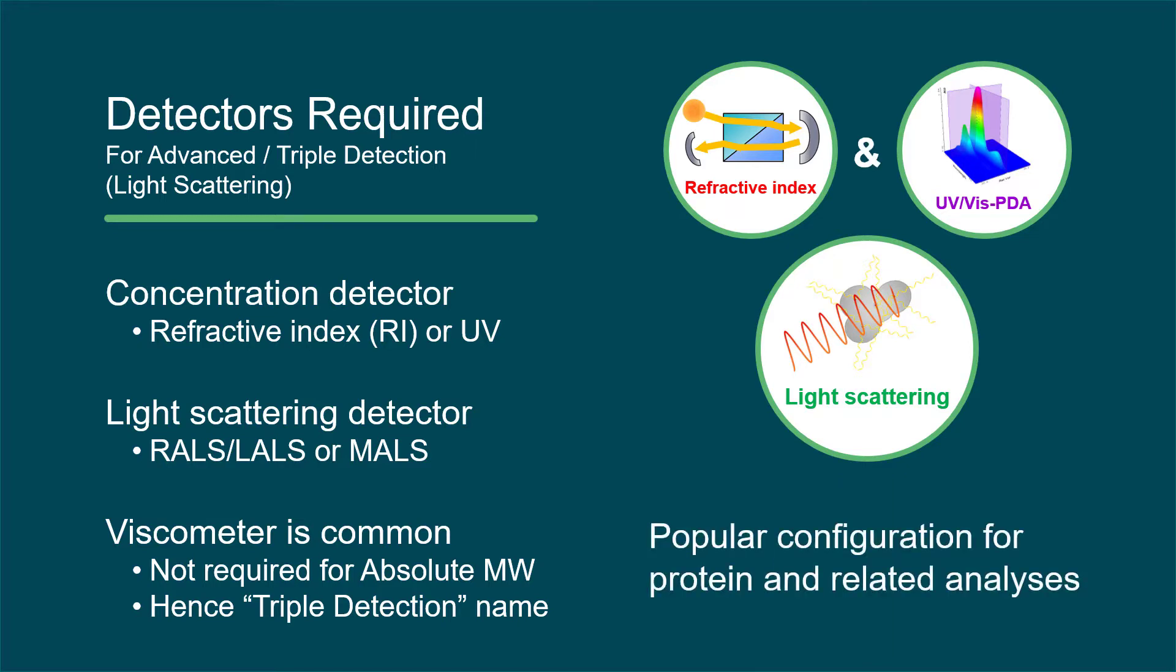Another triple detection variation, when frequently used for protein analyses, employs both RI and UV detectors alongside a light scattering detector.